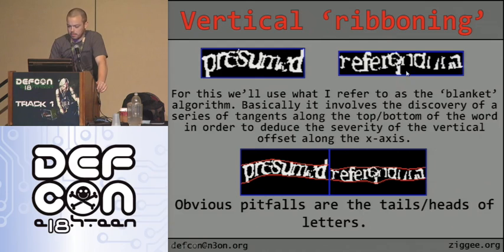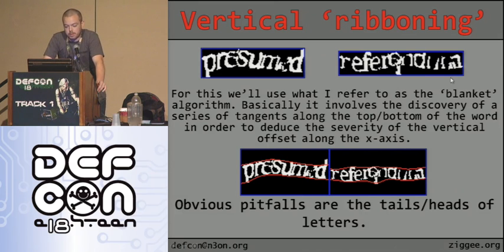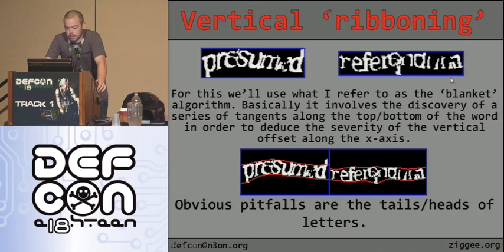You do that for every single pixel, and it takes care of the artifacts — you can see how the one below 'referendum' is now gone. Next is vertical ribboning, which is more challenging. The algorithm I use is called the blanket algorithm. It involves discovering a series of tangents along the top and bottom of the word to deduce the severity of vertical offset along the x-axis. Obvious pitfalls are tails and heads of letters like p and d, but it's usually not much of a problem.